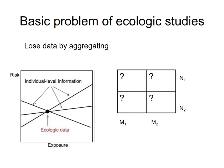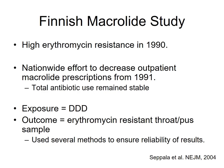The basic problem of ecological study design is that we start with individual-level data, aggregate it, and a lot of information is lost by aggregation. The Finnish macrolide study is a very famous example. Based on high erythromycin resistance rates in 1990, a nationwide effort to decrease outpatient macrolide prescriptions started in 1991. However, total antibiotic use remained stable. The exposure was defined as defined daily doses of erythromycin or any other macrolide, and the outcome was erythromycin-resistant throat swab samples.